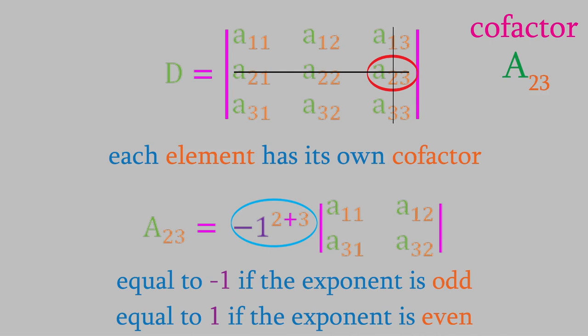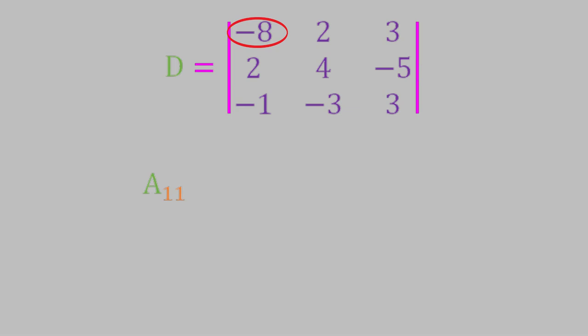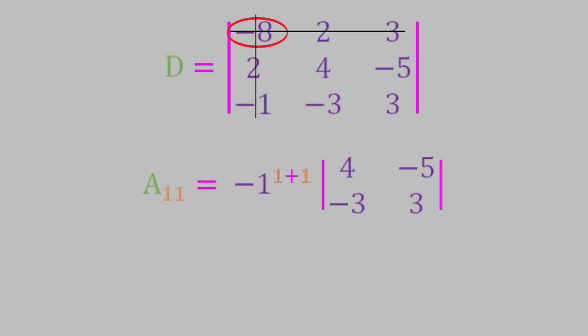This makes more sense if we try it with some actual numbers. For a 3 by 3 determinant, let's calculate cofactor A11 first. We mentally eliminate the row and column that the element is in, which leaves us with a 2 by 2 determinant. The factor we multiply it by is negative 1 raised to the power of 1 plus 1. The determinant is equal to 12 minus 15, and the multiplication factor is 1, giving us a result of negative 3.